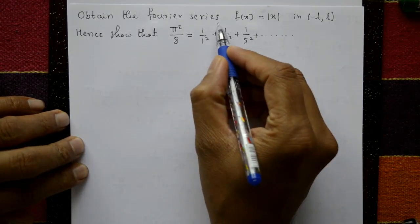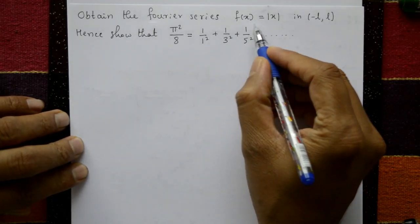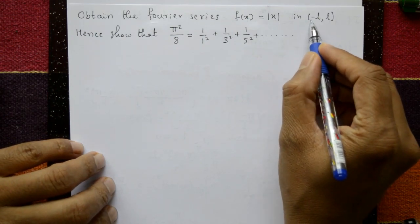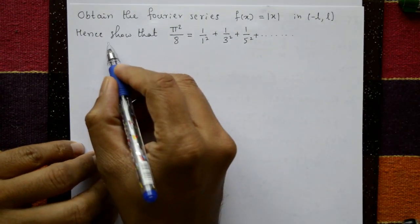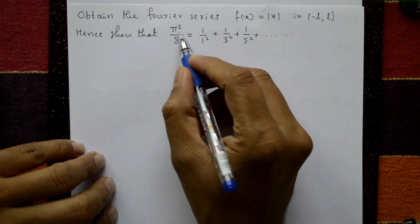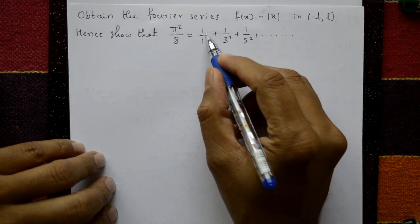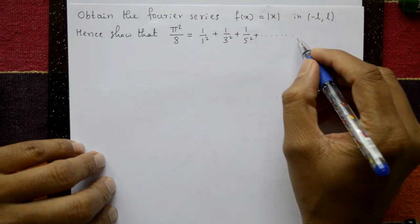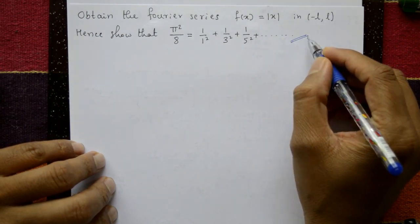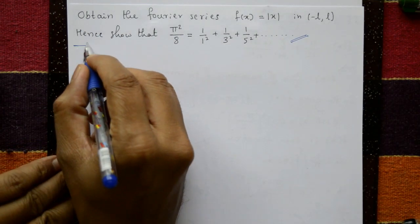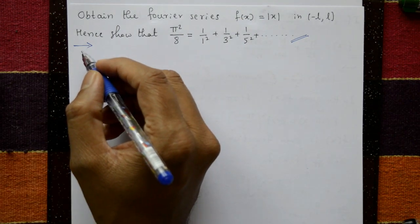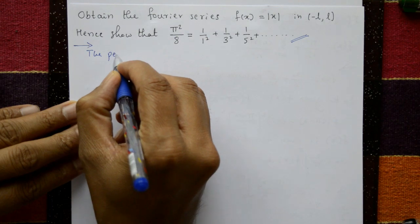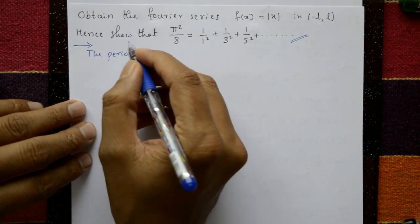Obtain the Fourier series of f(x) = |x| in the interval minus l to plus l, and hence show that π²/8 is equal to 1/1² + 1/3² + 1/5² + so on. Finally, we require this series.